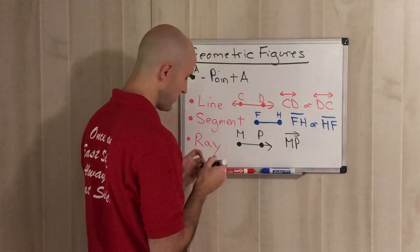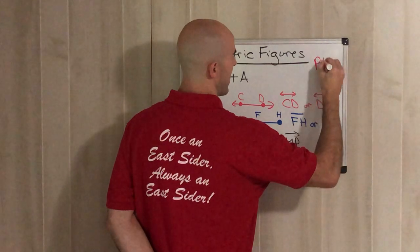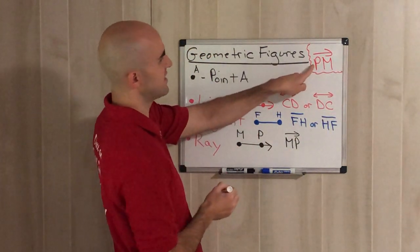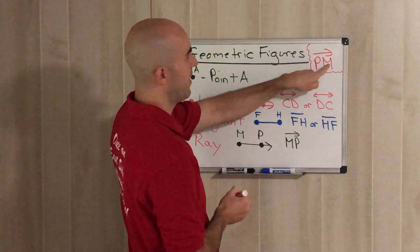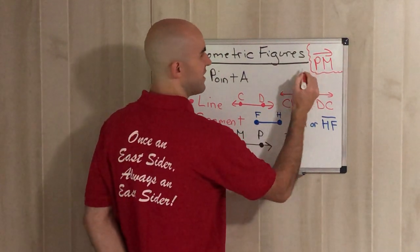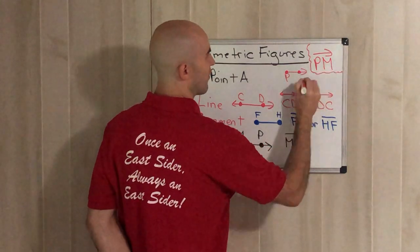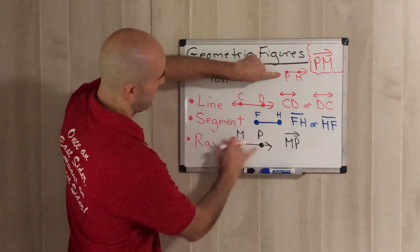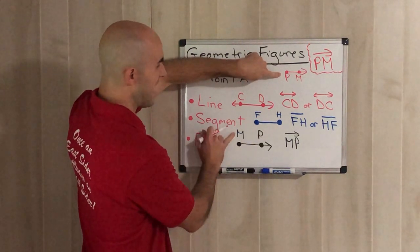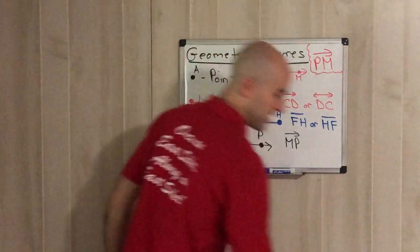If I were to write ray PM instead, that would mean it starts at P and goes on forever toward M — and that's completely different. Those are two different rays. Always make sure that what you start with is the starting point. If it starts at M, write M first. If it starts at P, write P first. There are major differences between the two.